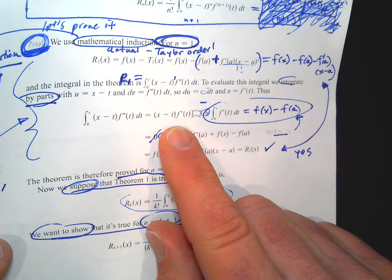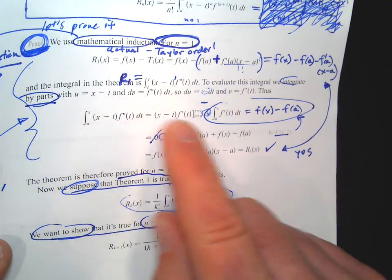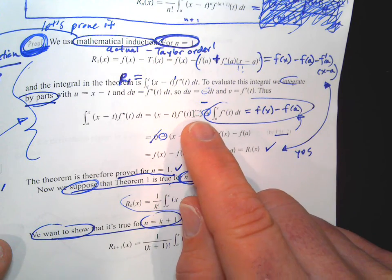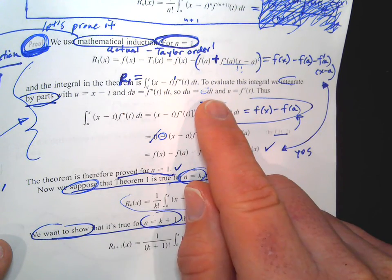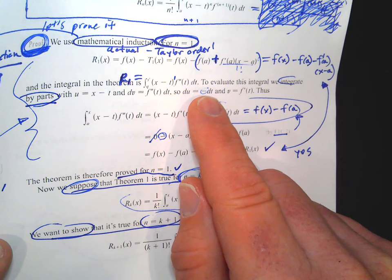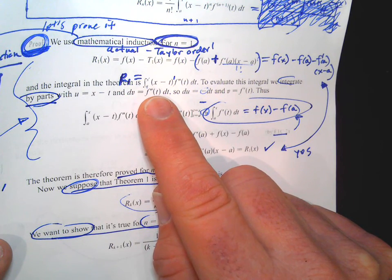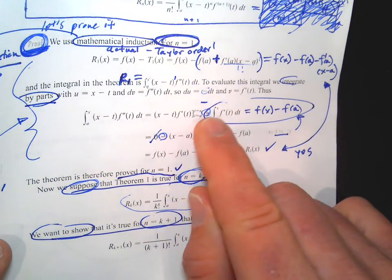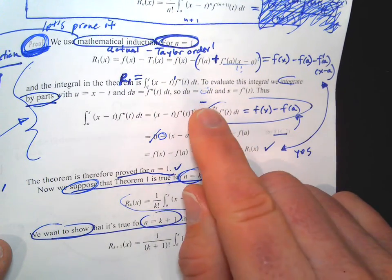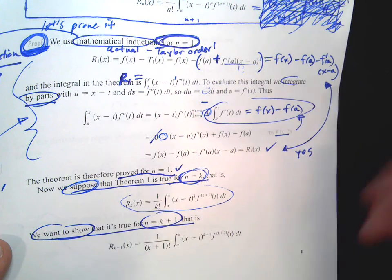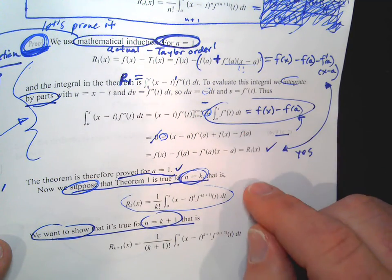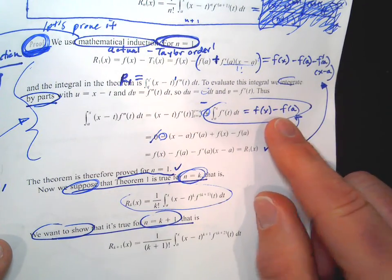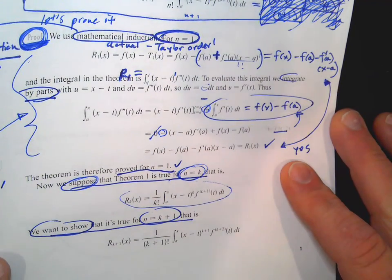When we do integration by parts, we get uv evaluated from a to x, minus the integral of the two new things together — dv and du. That's going to be the integral of negative f double prime. The two negatives become a plus because you're subtracting and it has a negative in it. By the fundamental theorem of calculus, if you integrate f prime, you get f, and then you plug in the limits. That's a nice theorem that we've relied a lot on.